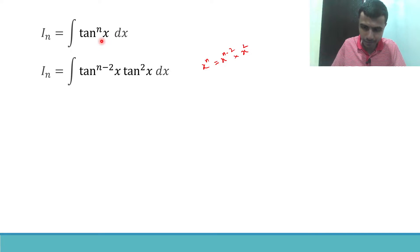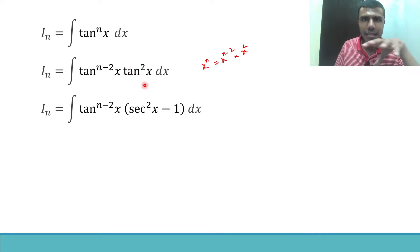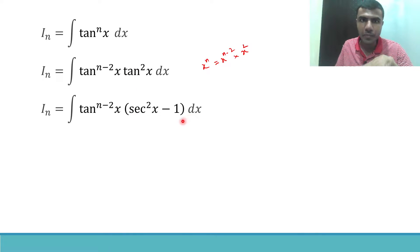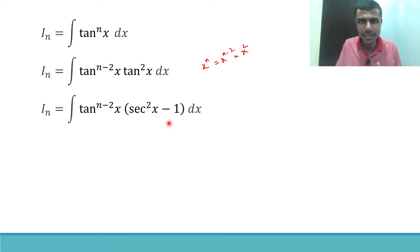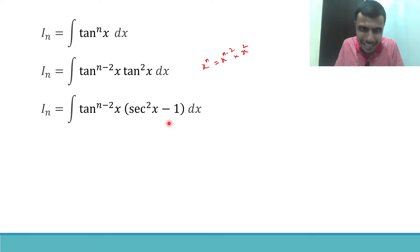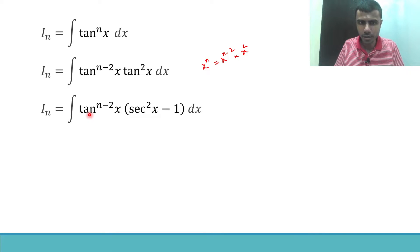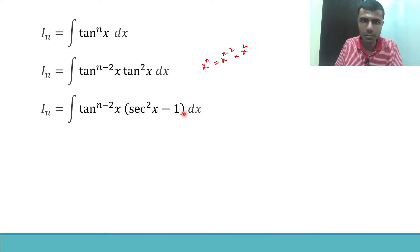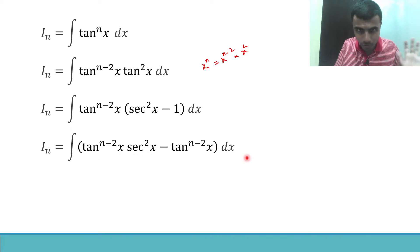Now write tan² x as sec² x − 1. From basic trigonometry, there is an identity: sec² x − tan² x = 1, so sec² x − 1 = tan² x. Next, just multiply: tan^(n-2) x into sec² x, minus tan^(n-2) x into 1.